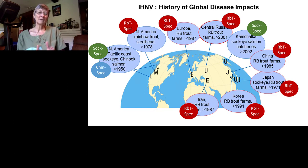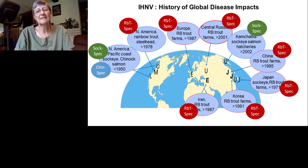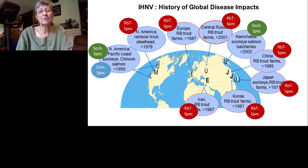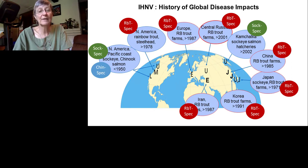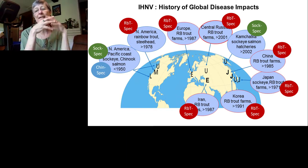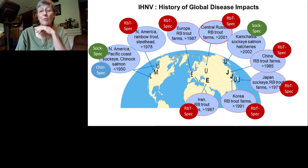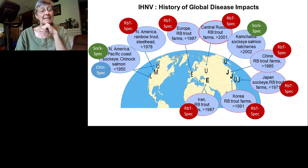Looking at disease impacts helps us understand virus evolution. IHNV is distributed across the northern hemisphere in five genogroups. In North America, the earliest detections were in Chinook and sockeye salmon before 1950. One U-group virus from sockeye was transported to Japan in 1971, broke out in sockeye, and became established in rainbow trout aquaculture there. Independently in North America, IHN developed in rainbow trout in the late 1970s, forming the M genogroup.